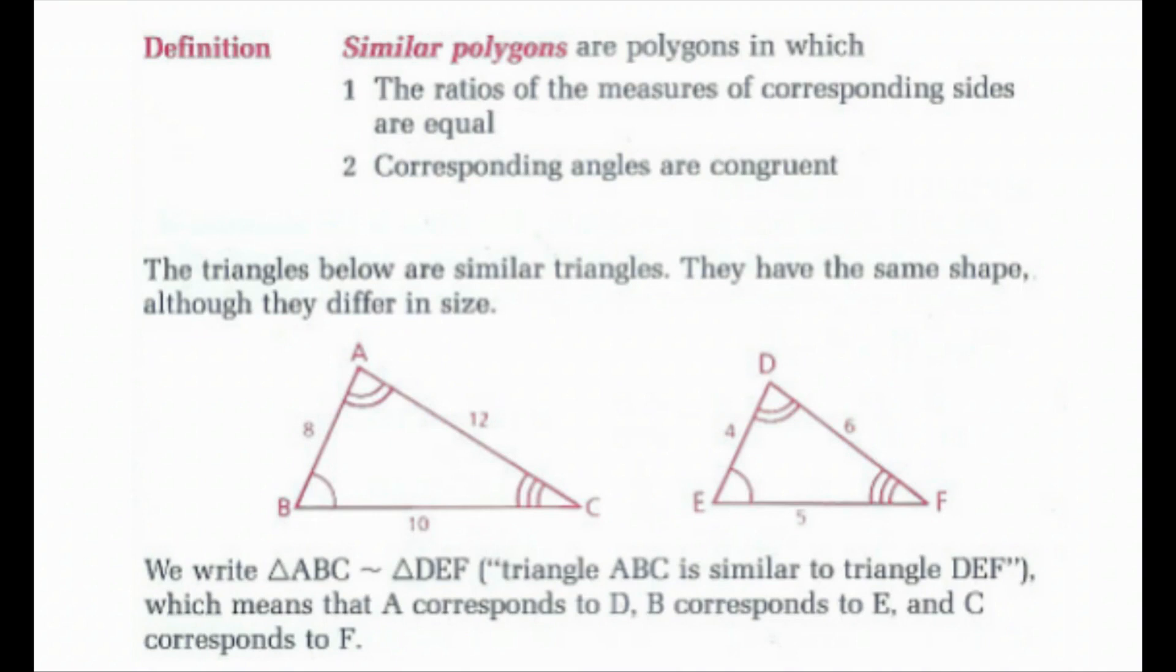Notice we have the sides in proportion. So 8 over 4 is equal to 12 over 6, which is equal to 10 over 5, which all would simplify to 2. We can write triangle ABC is similar to triangle DEF, which means that A corresponds to D, B corresponds to E, and C corresponds to F.